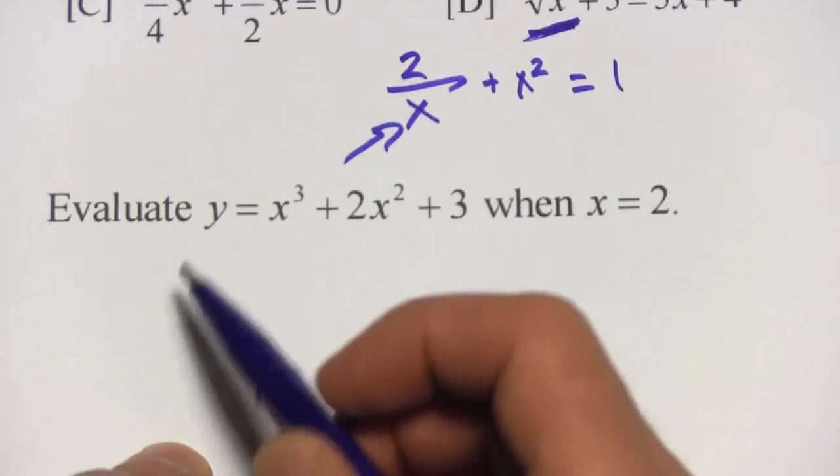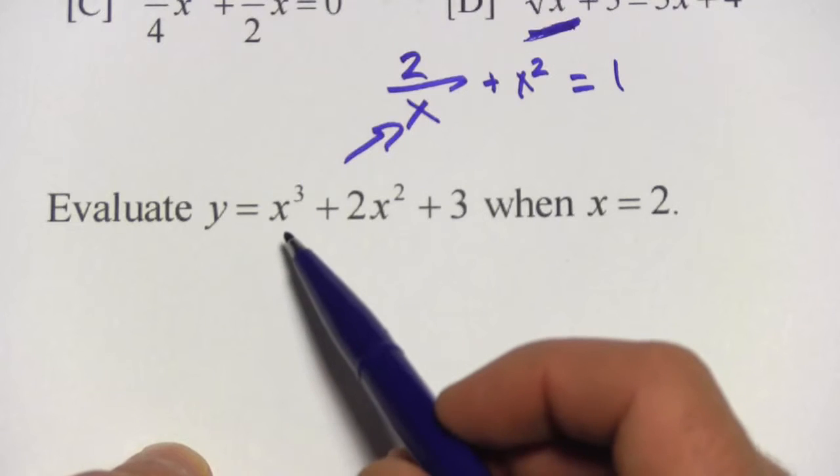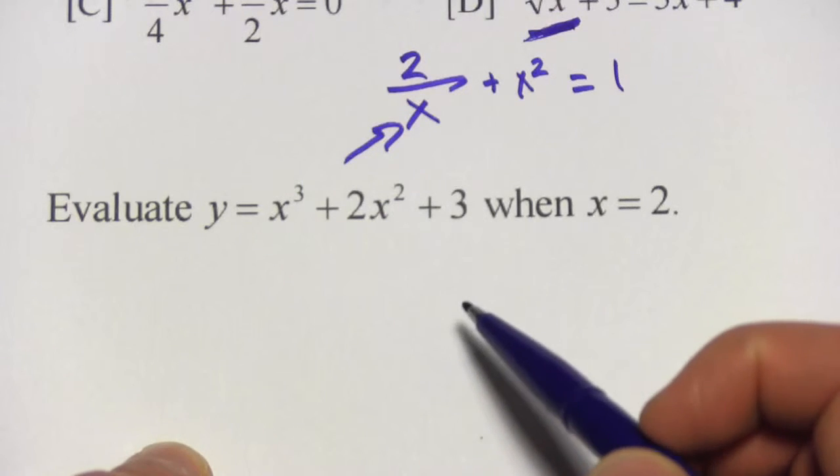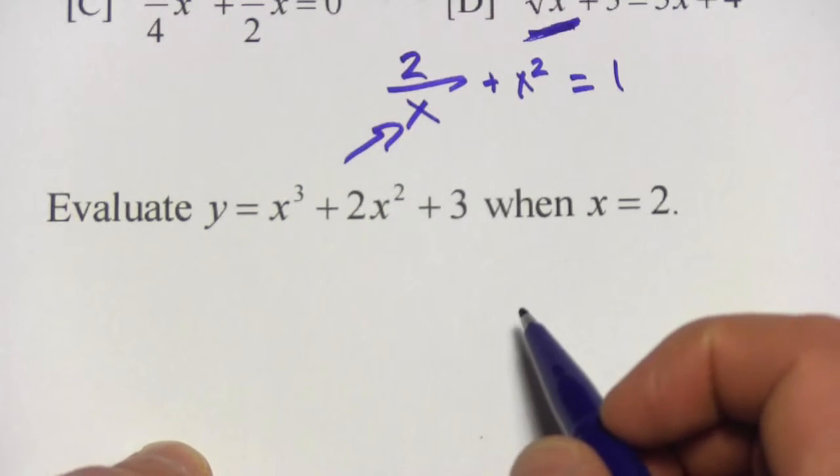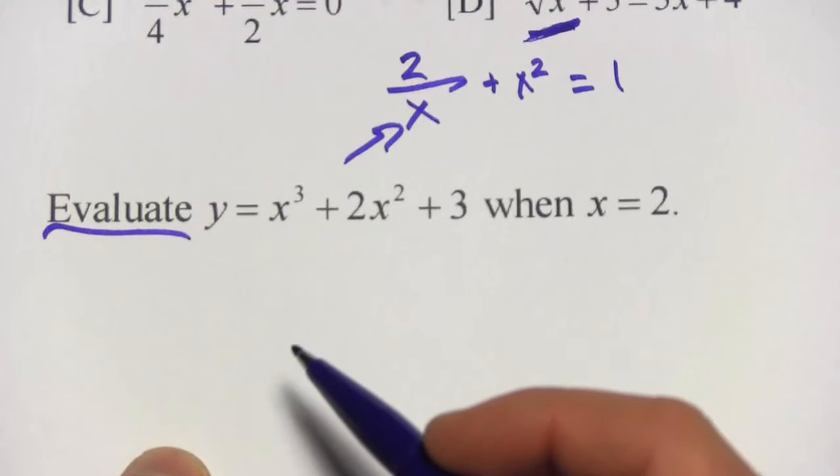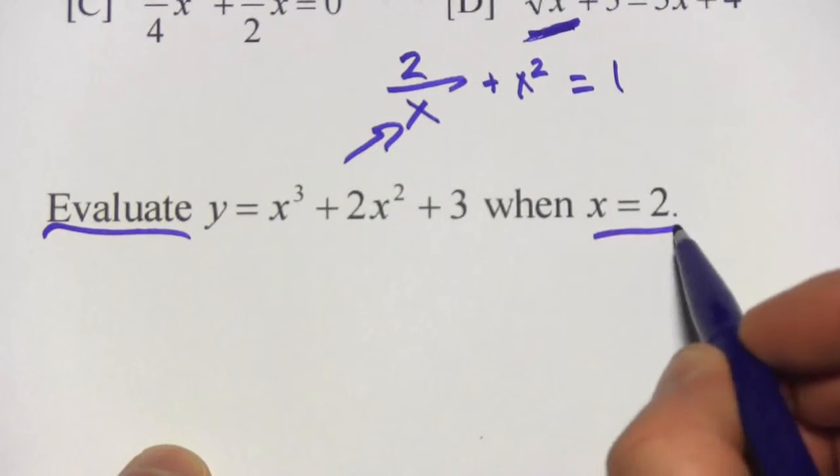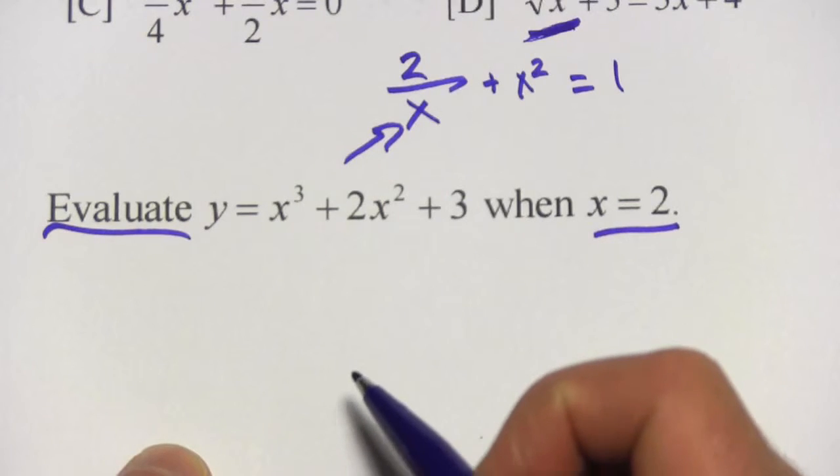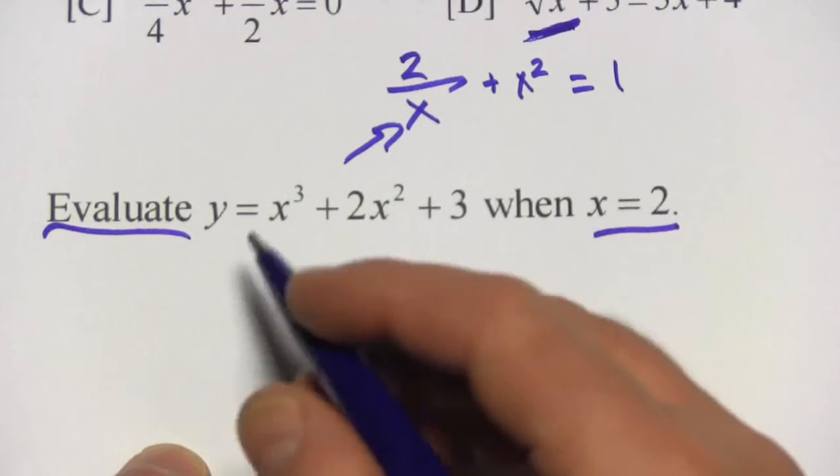So in this question, it says evaluate y equals x cubed plus 2x squared plus 3 when x equals 2. And when you see evaluate, that just means plug and crunch. We're going to plug 2 in wherever we see x and then we're going to crunch out the calculations.